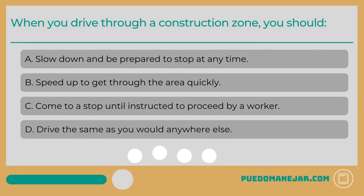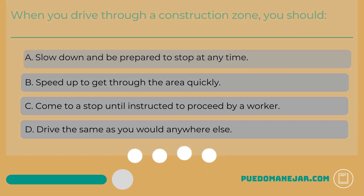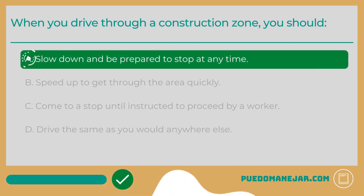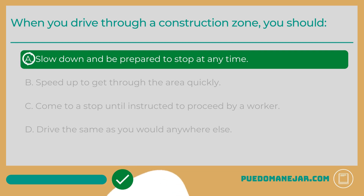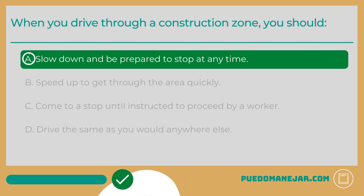When you drive through a construction zone, you should: A. Slow down and be prepared to stop at any time. B. Speed up to get through the area quickly. C. Come to a stop until instructed to proceed by a worker. D. Drive the same as you would anywhere else. The answer is A. Construction zones pose additional hazards. Reduce your speed and be prepared to stop. The speed limit may be reduced, there may be a flagger directing traffic, and the normal flow of traffic may be temporarily diverted. Give workers plenty of space.